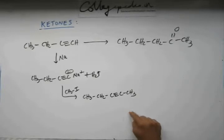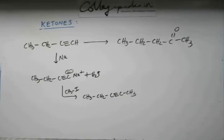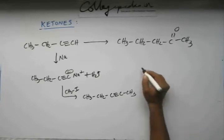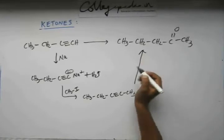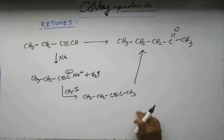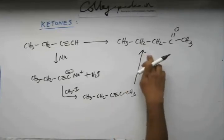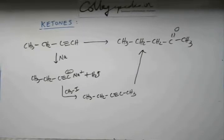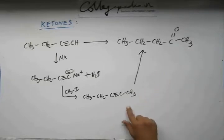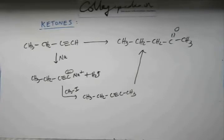Now from 2-pentyne you have to go to 2-pentanone. Two steps are over — this is your final shot. Step 3, and the question was to carry out the conversion in not more than 3 steps. So hopefully we can do it in 3 steps if you can think of a reagent which brings about this conversion.